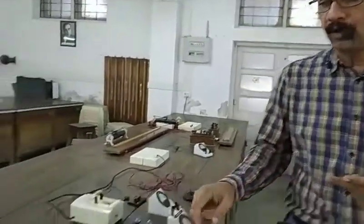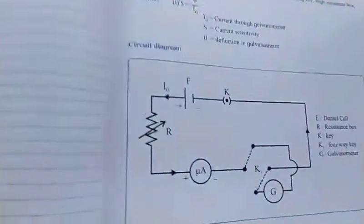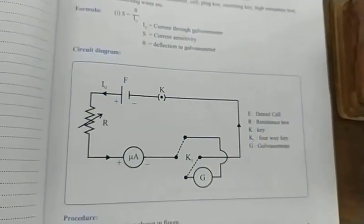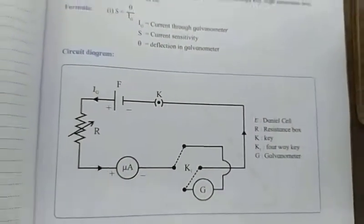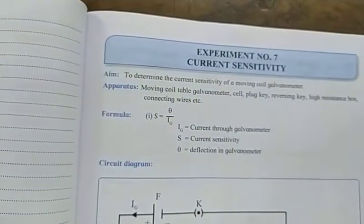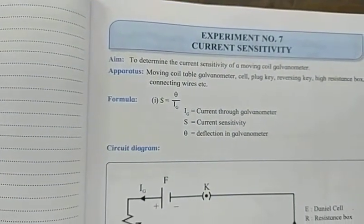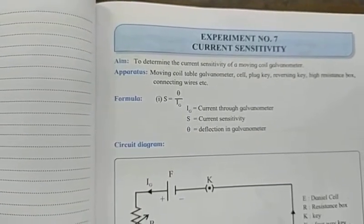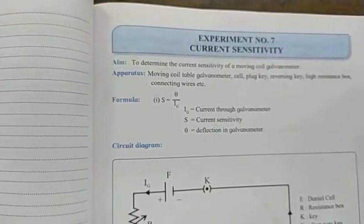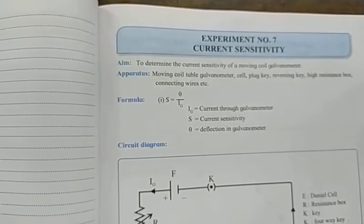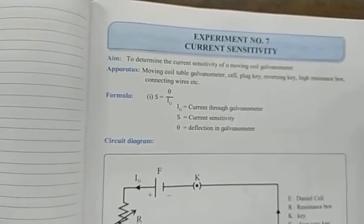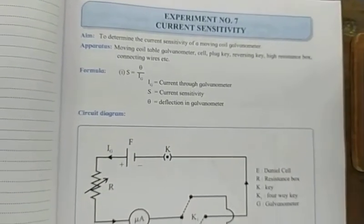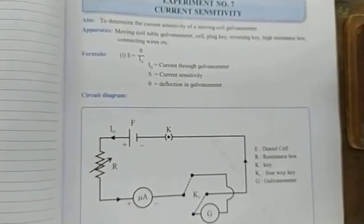That can be very easily seen by the formula of current sensitivity. Looking at the circuit diagram and the formula, current sensitivity S is equal to theta upon I. So theta is in the numerator — if it is greater for smaller values of denominator current I, the sensitivity of the galvanometer will be said to be large.